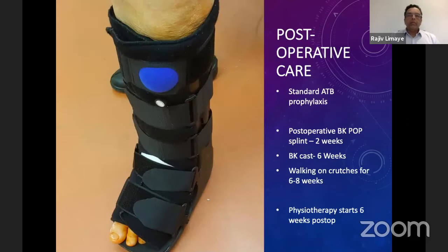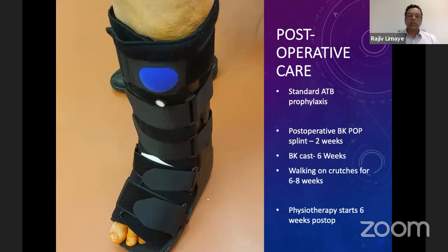Postoperative care includes standard thromboprophylaxis for six weeks, followed by cast application for at least six weeks which is non-weight-bearing, then a boot for six to eight weeks if necessary. We try to wean the boot off in four weeks after they come out of the plaster. In total, they may require up to three months of protection. Physiotherapy starts at six weeks as active dynamic exercises rather than static exercises.